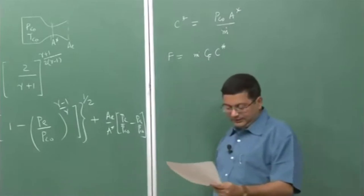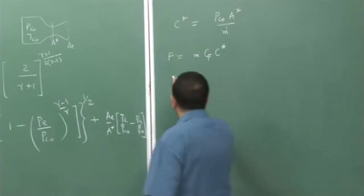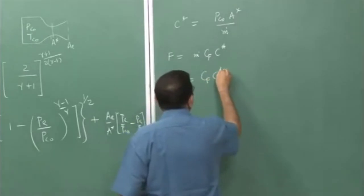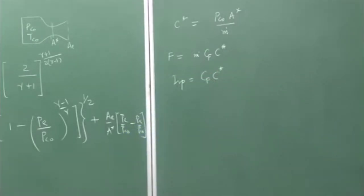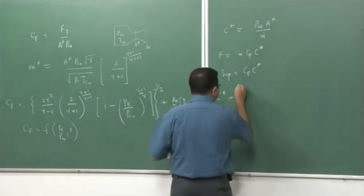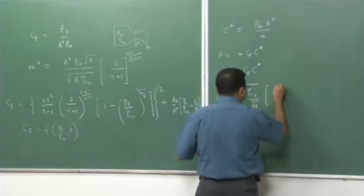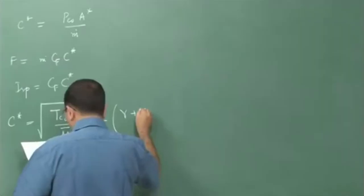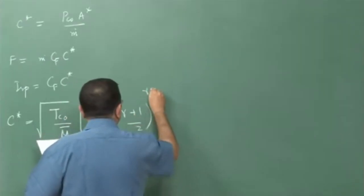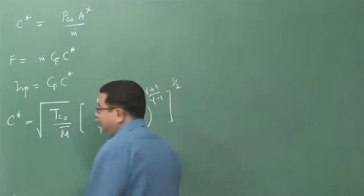We proved that the total thrust is the product of mass flow rate, thrust coefficient, and characteristic velocity. Based on this, the specific impulse I_sp is the product of C_f and c*. We derived an expression for c* and stopped there at the end of the last lecture.